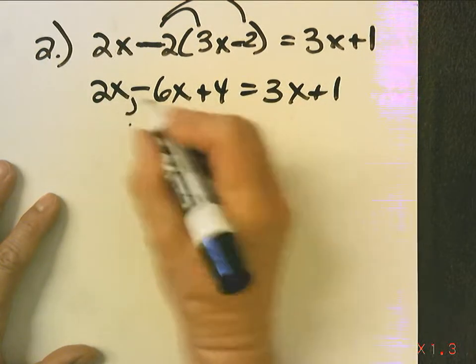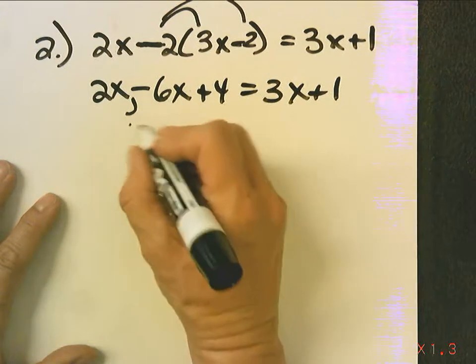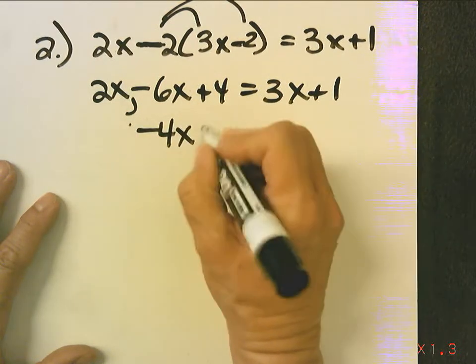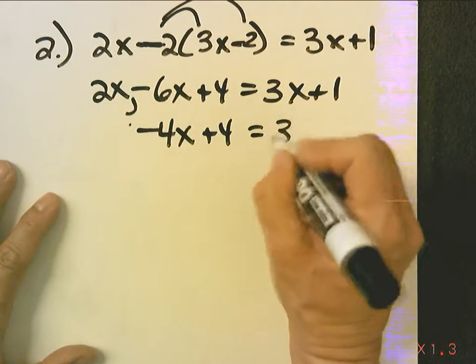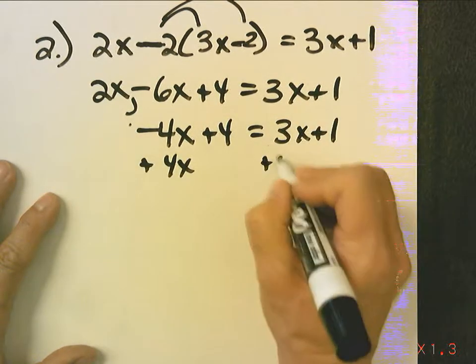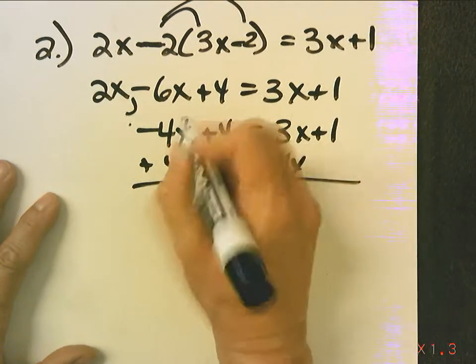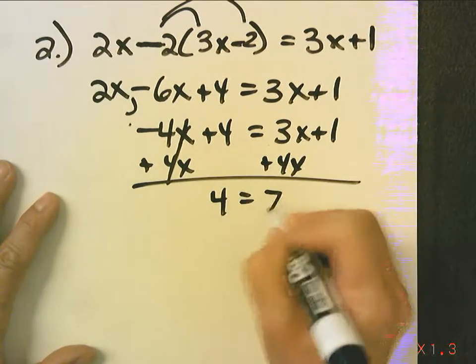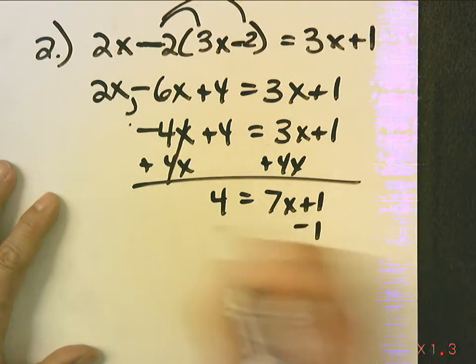This becomes, I combine a 2x and a negative 6x, I get negative 4x plus 4 equals 3x plus 1. I'm going to add 4x to both sides to zero out the x from this side. I'm going to subtract 1.